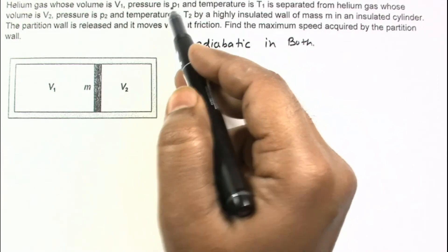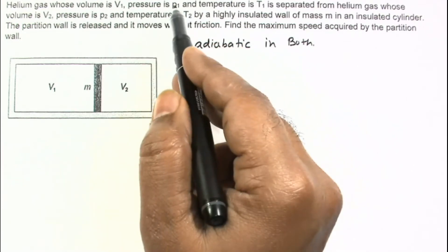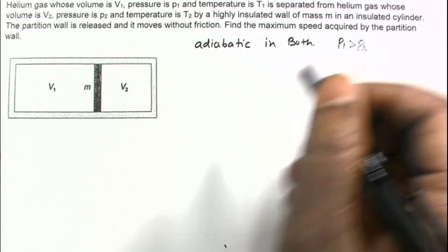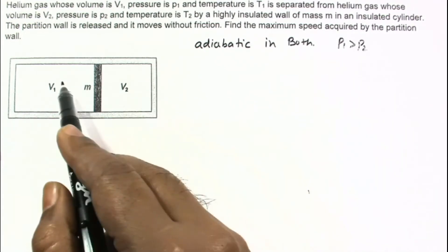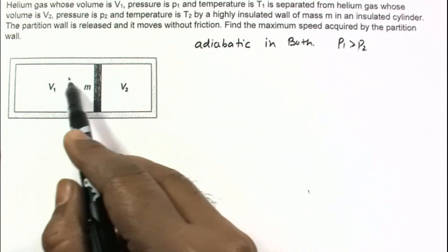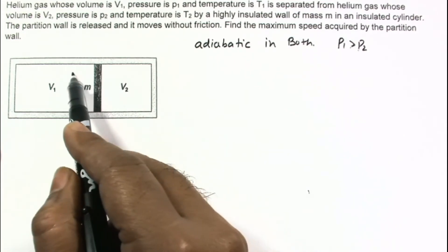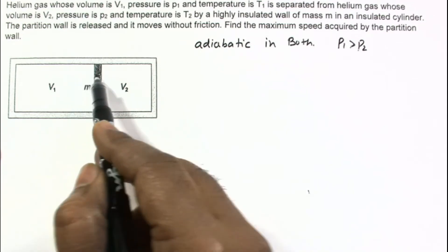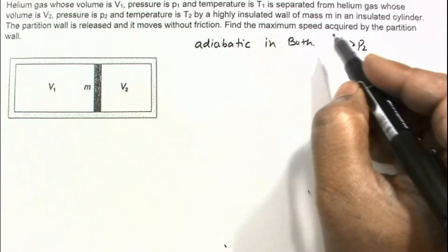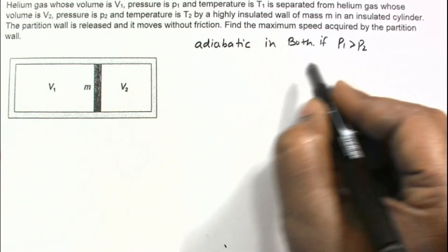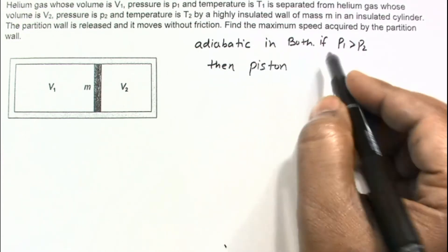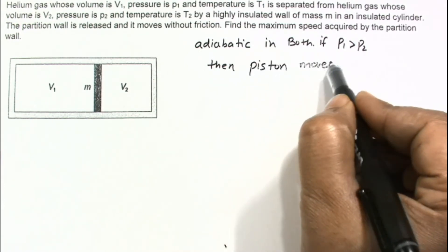Let us assume P1 is greater than P2. If P1 is greater than P2, then the force from the left side is higher than the force from the right side. So the piston will move towards the right.